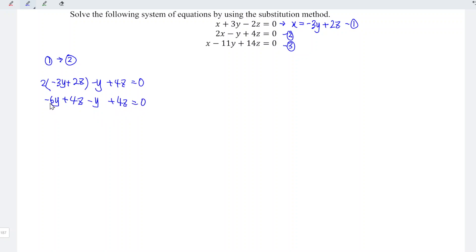So we have minus 6 minus 1 which is minus 7y, plus 4 plus 4 which is plus 8z, and this is equal to zero, which means that 7y is equal to 8z.